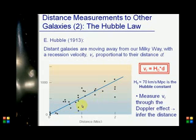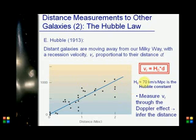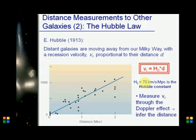As galaxies or stars or objects move away and are more distant, their velocities are higher and higher. So if we get the velocity of a galaxy using the Doppler effect and redshift, we can know the distance. Knowing the velocity, we can get the distance by substituting into Hubble's constant of approximately 70 kilometers per second per megaparsec.